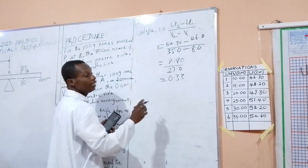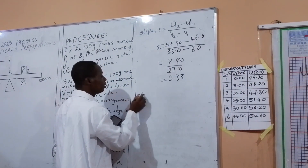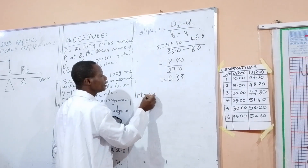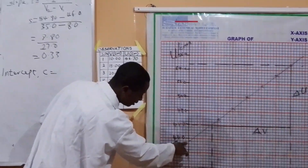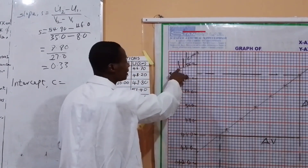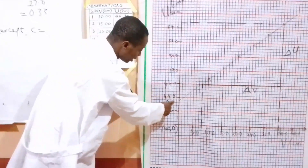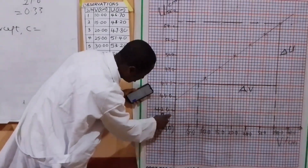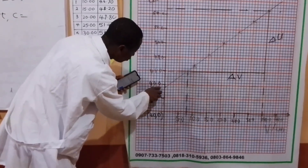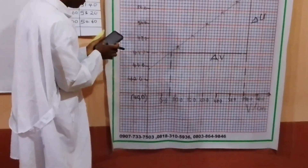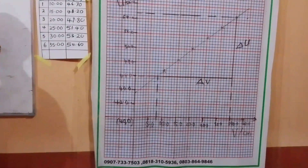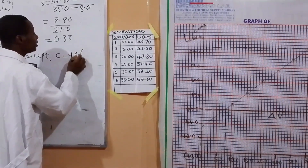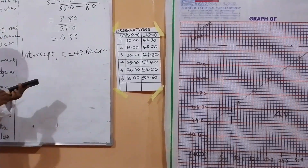The next question is the intercept. We are told to find the intercept — that is where this graph touches or crosses the U-axis. Because there is no y-axis in a physics graph. Here we have 0.4 per box, so this is 42, and 44 minus 0.4 is 43.6. What we have here is 43.6 centimeters — that is the intercept.